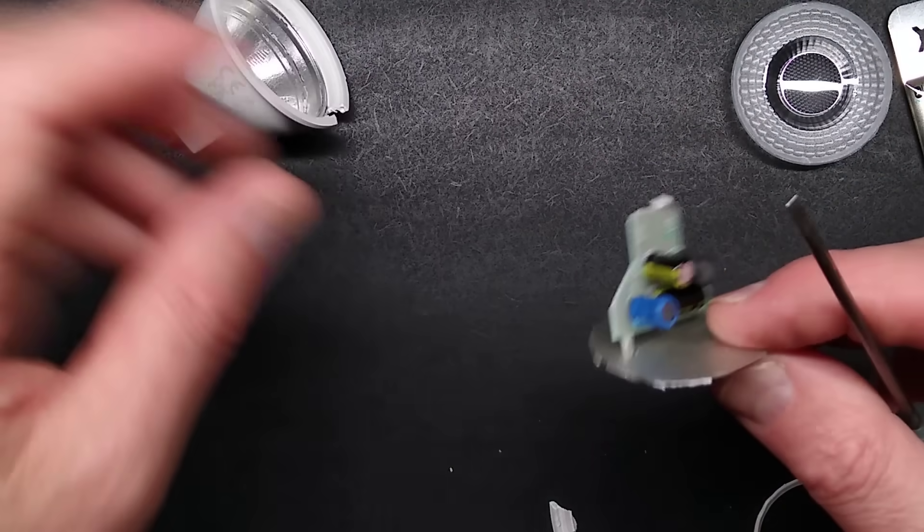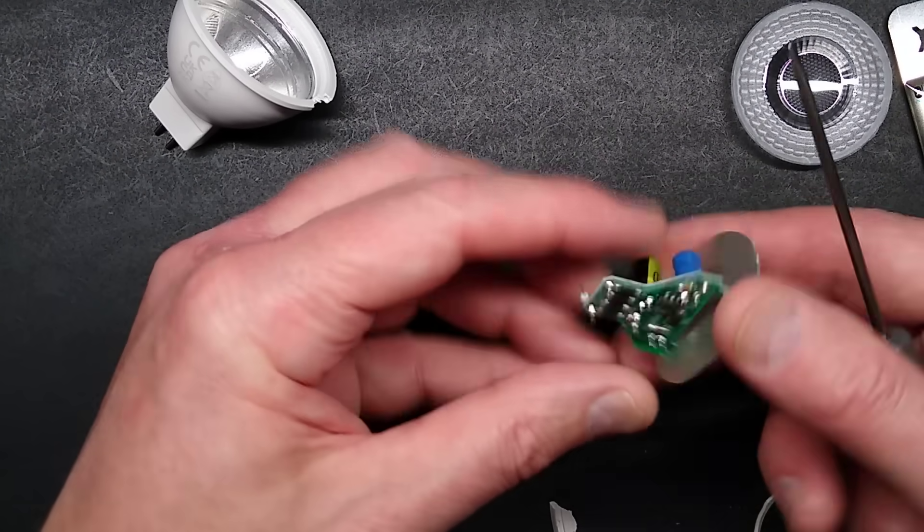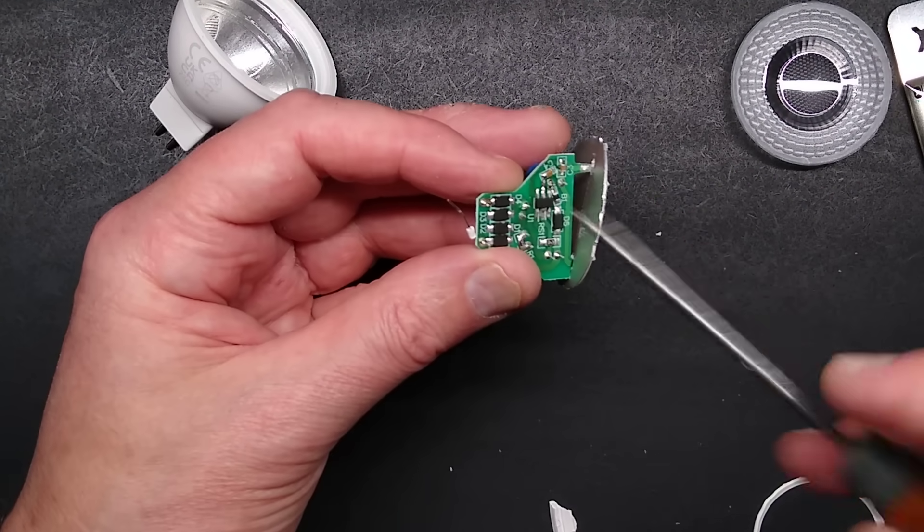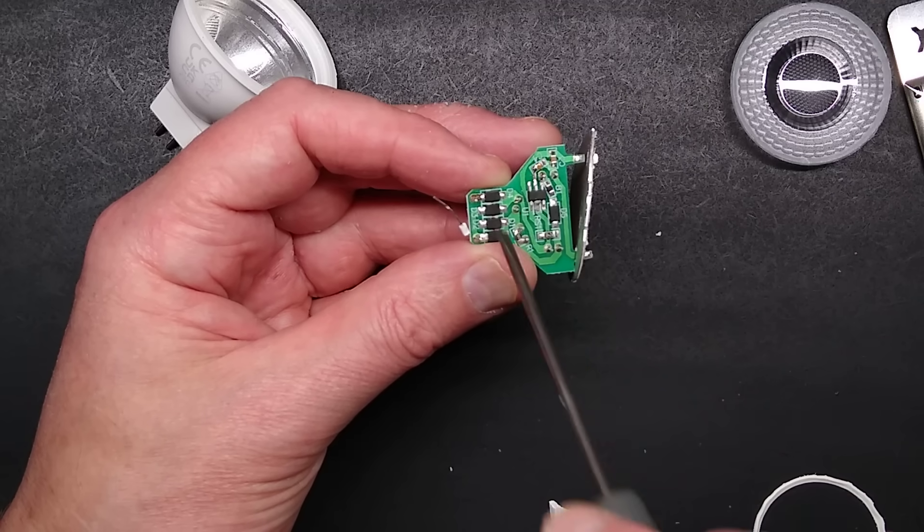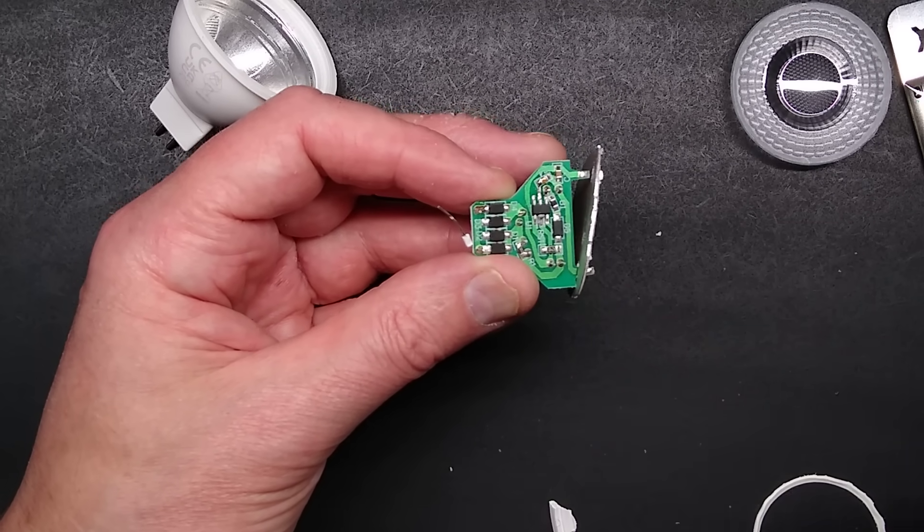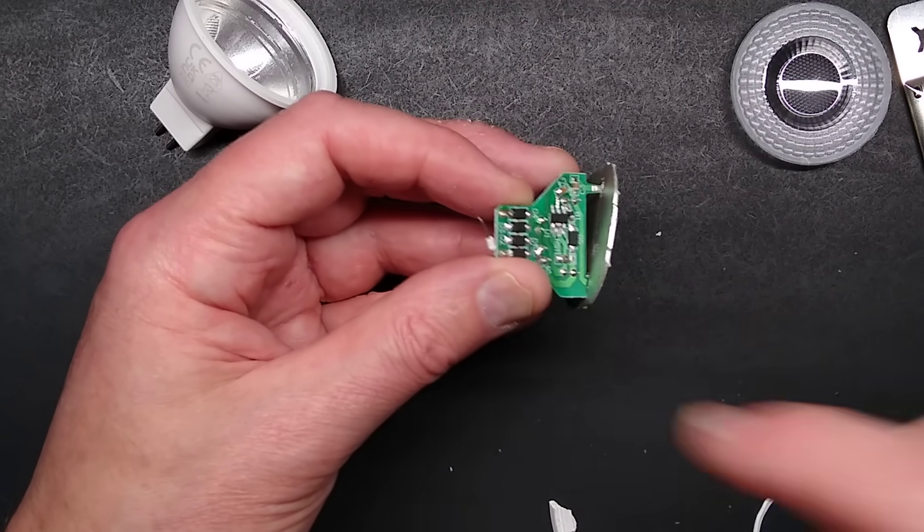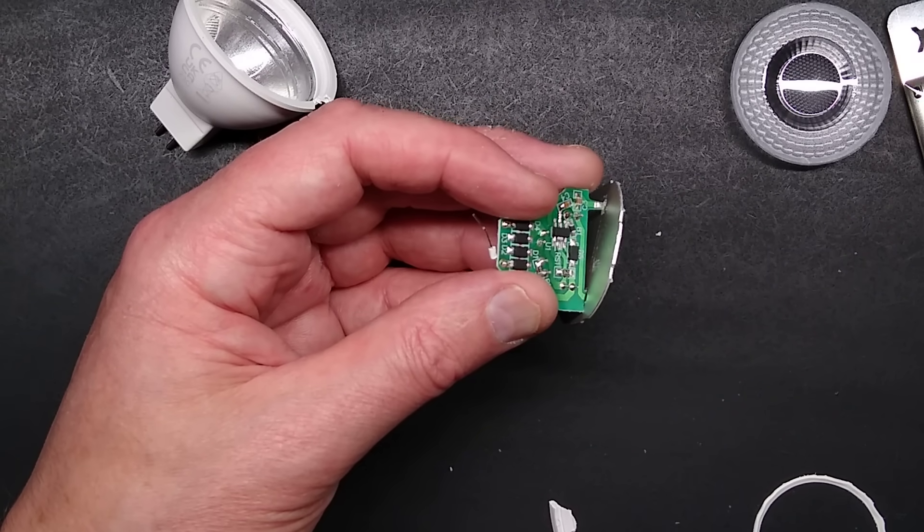Okay, right, I really ripped it out. So here is the circuit board we're looking for and what I'll do is I'll take a picture of this and then we'll explore it further and I'll explain why the halogen transformers can damage these lamps.